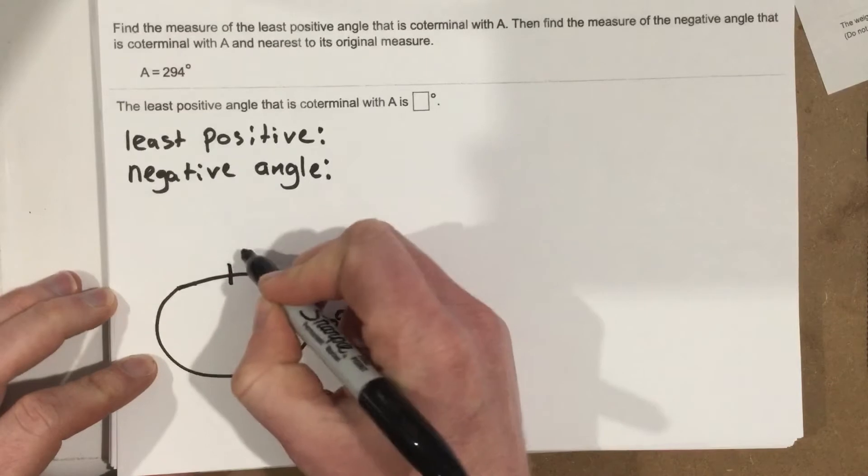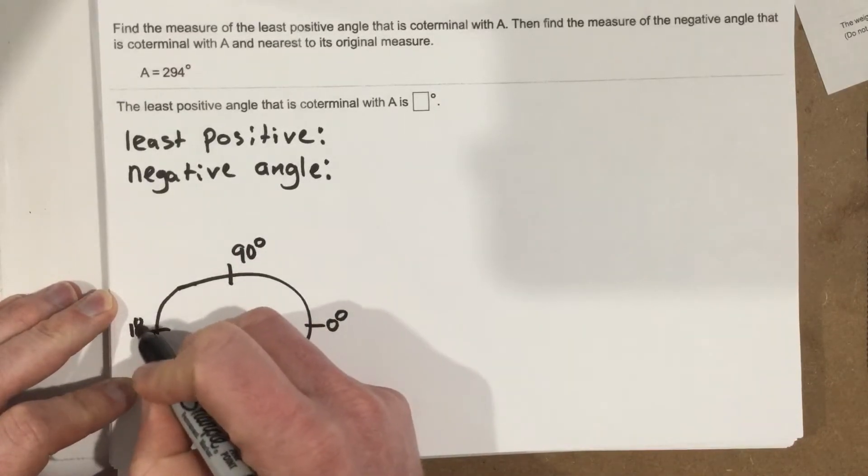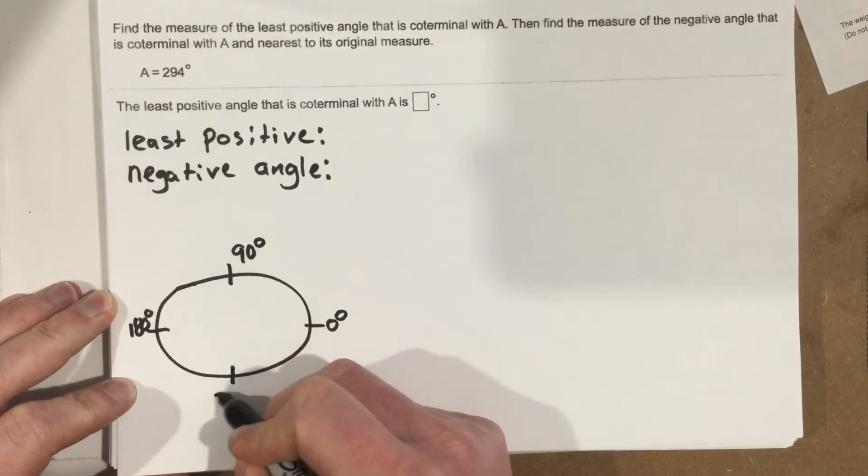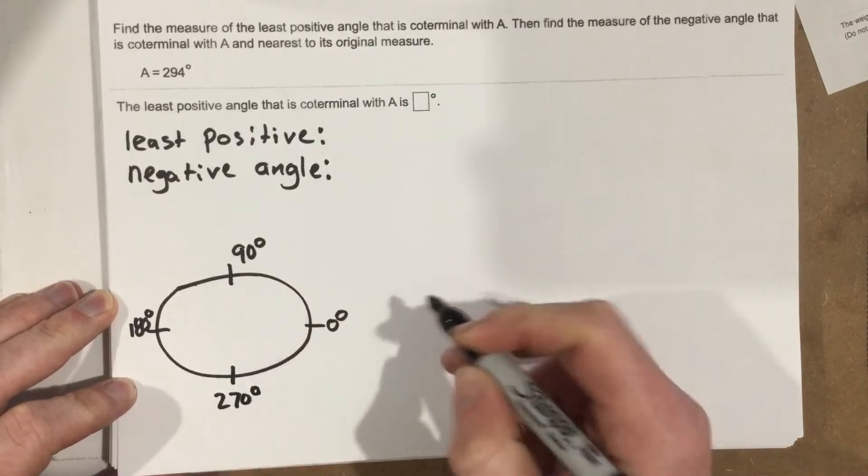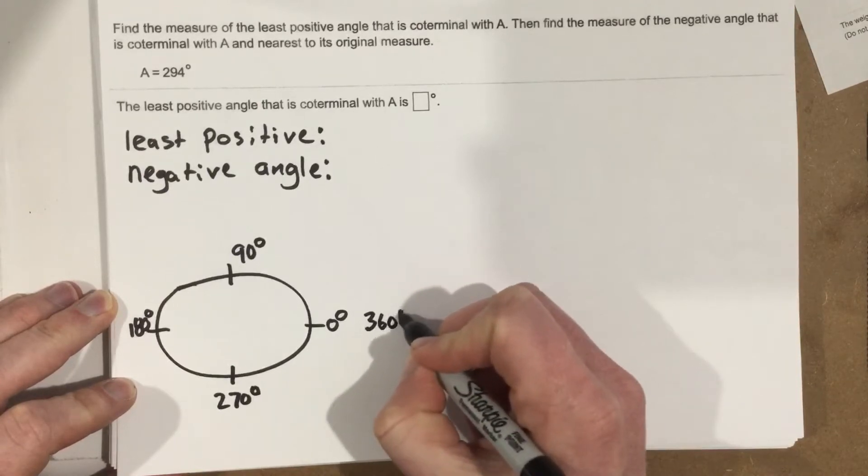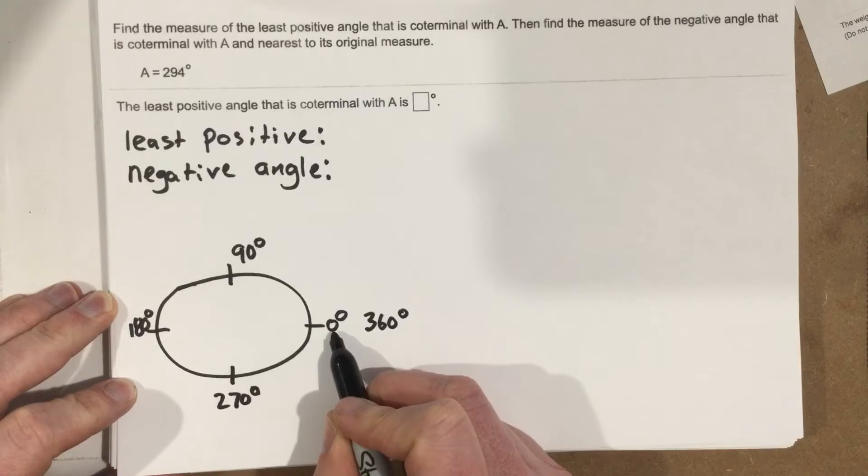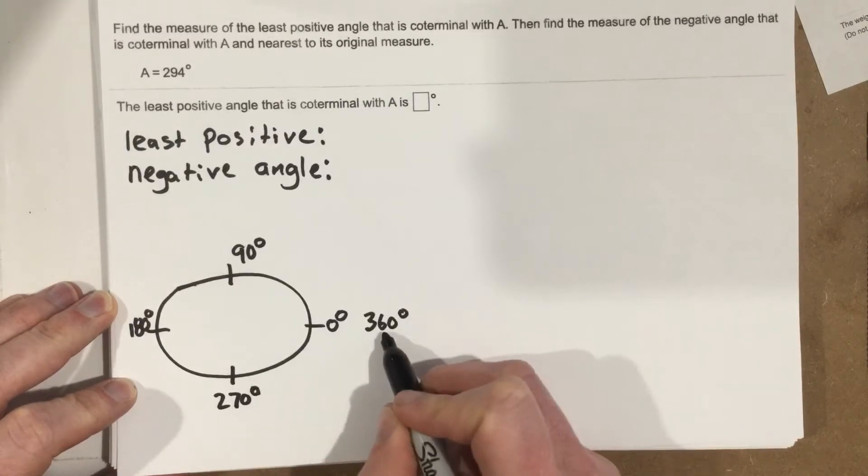This is 90 degrees. This is 180. This is 270. And all of a sudden, then we get back here, and this is also 360 degrees. These two are coterminal. 0 degrees has a coterminal angle of 360 degrees.